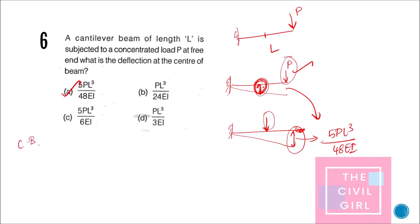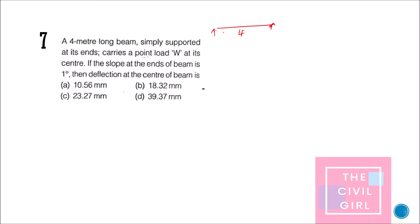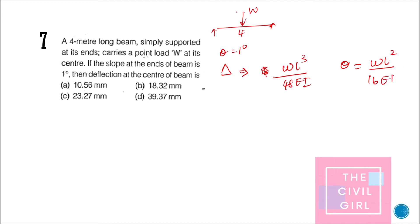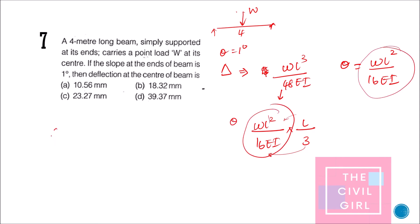Next question: a 4-meter long simply supported beam carries a point load W at the center. If the slope at the end of the beam is 1 degree, what is the deflection at the center? The deflection formula is δ = WL³/48EI and the slope formula is θ = WL²/16EI. Rewriting the slope formula: θ = (WL³/48EI) × (1/(L/3)), so δ = θ × L/3.